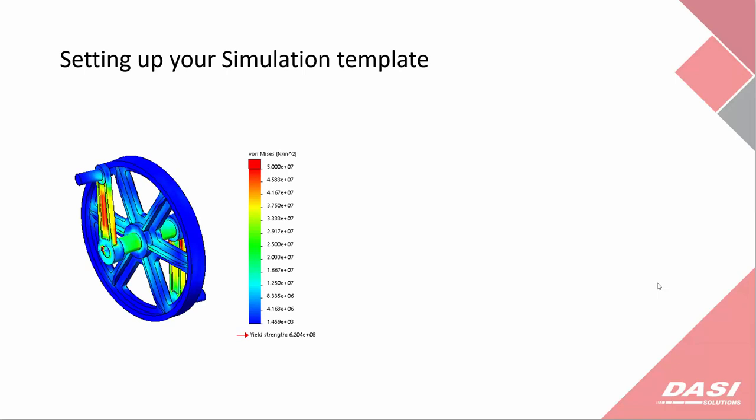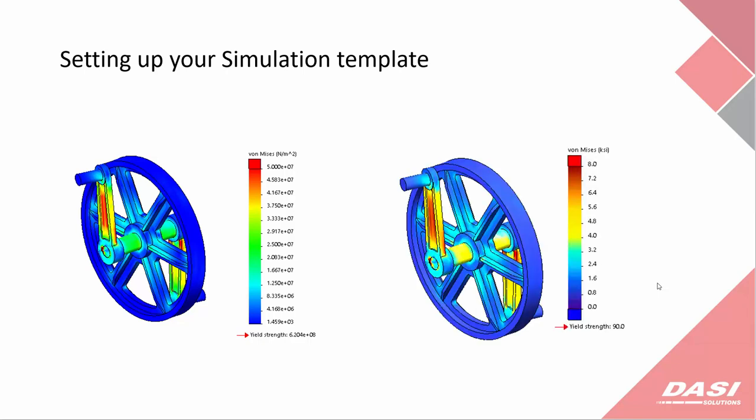We're going to jump into the Simulation Interface next, where I'll show you how to customize some of the out-of-the-box units. Out of the box, the color plots are going to look something like this, which I'm not a big fan of because you see a lot of scientific notation. Once we're done, we'll clean up this chart so it has nice, simple units — instead of the default newtons per meter squared, we'll change it to kilopounds per square inch (KSI), and pounds instead of newtons.